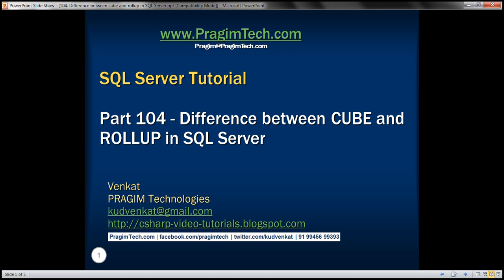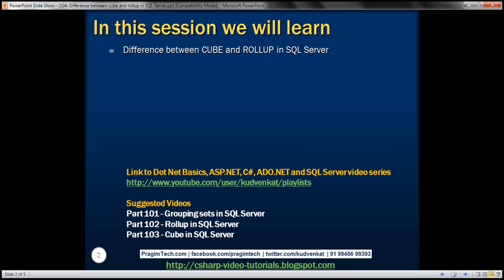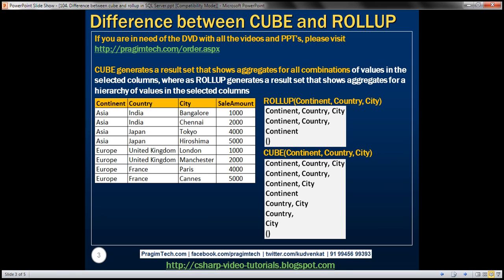This is part 104 of SQL Server tutorial. In this video, we'll discuss the difference between CUBE and ROLLUP in SQL Server. CUBE generates a result set that shows aggregates for all combinations of values in the selected columns, whereas ROLLUP generates a result set that shows aggregates for a hierarchy of values in the selected columns. Let's understand this with an example.